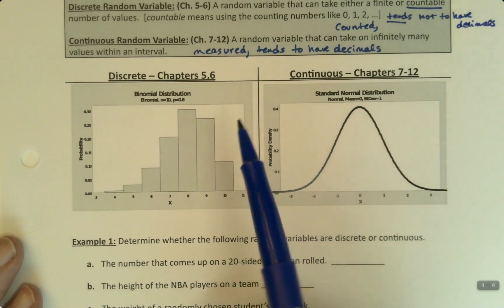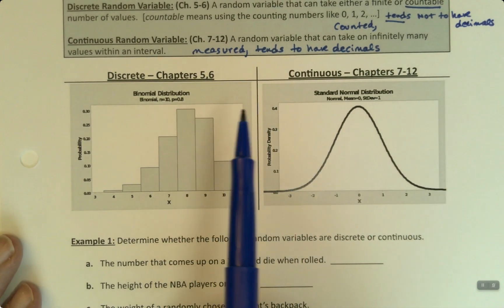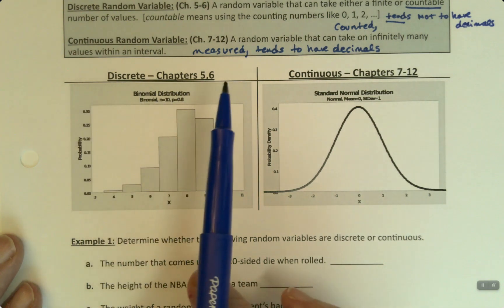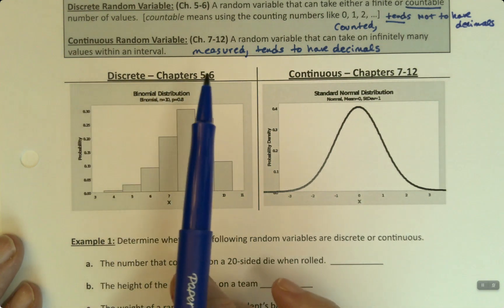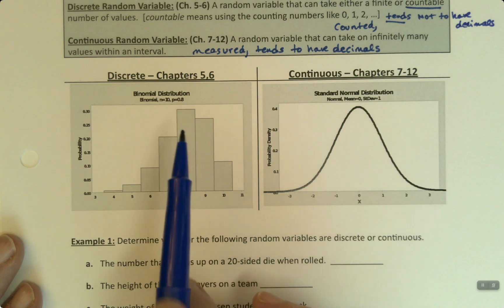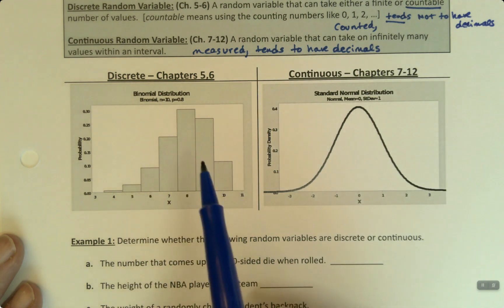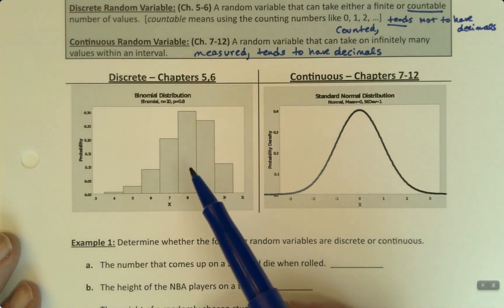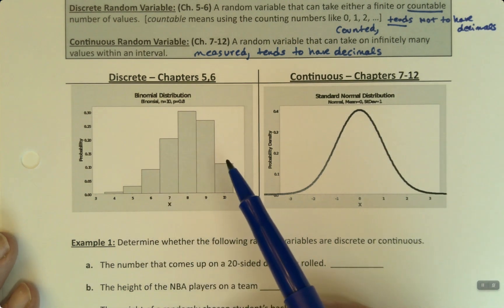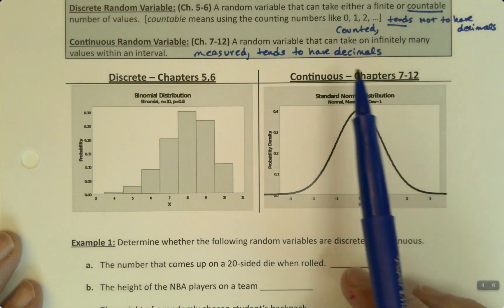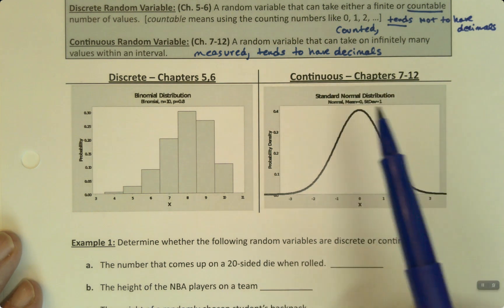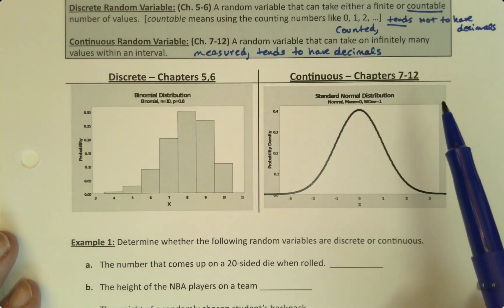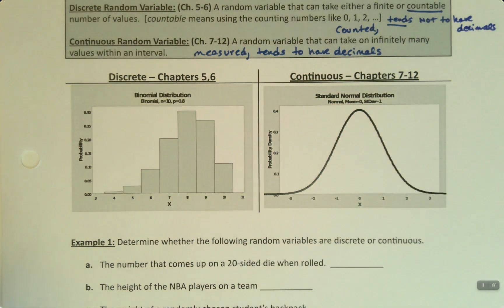Alright, so why does this matter? Well, because we're going to look at them in different chapters. So, discrete probability distributions are really Chapters 5 and 6. Especially Chapter 6, of course. But that's what we're working with in Chapter 5 as well. Everything was counted, right? We could figure out the probabilities by counting the cards in the deck. That kind of thing. Whereas, continuous is what we're going to be working with from Chapter 7 onward. So, once we hit Chapter 7, everything will be continuous and won't be discrete anymore.